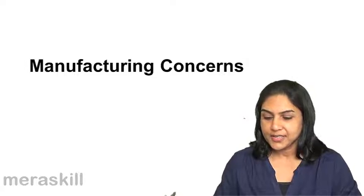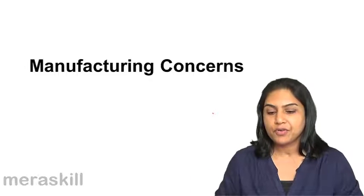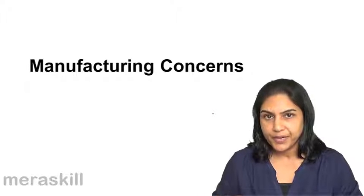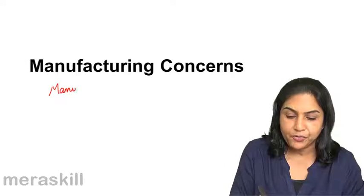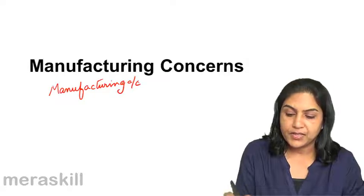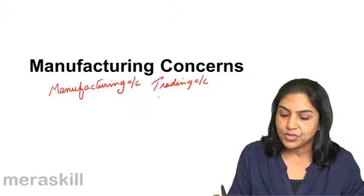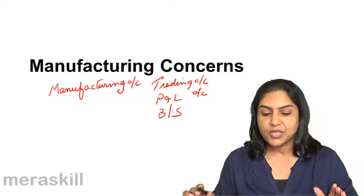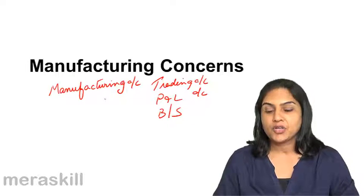Now we will discuss the final accounts of a sole proprietor engaged in a manufacturing activity. A sole proprietor engaged in manufacturing will prepare what is called a manufacturing account. This is in addition to the trading account, the profit and loss account, and the balance sheet. So manufacturing concerns prepare a manufacturing account along with trading, profit and loss, and balance sheet.